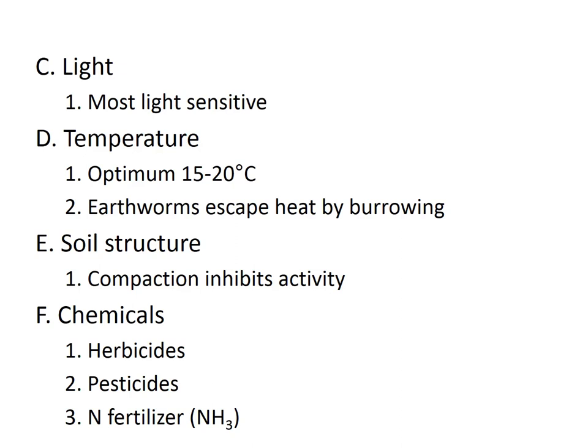Temperature-wise, fauna are usually in the mesophilic range. To escape heat, earthworms burrow deeper into the soil. Compact soil structure can inhibit their activity. Additionally, the addition of chemicals like herbicides, pesticides, and fertilizers can affect their presence — if pollution exists, their numbers will be greatly reduced, which is why they can serve as indicators of environmental quality.